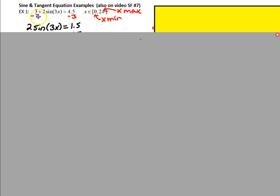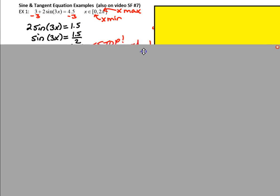The first step is to subtract 3 from both sides of the equation, leaving us with 2 sine of 3x equals 1.5. Then we'll divide both sides by 2. That would just equal 0.75 if you wanted to write it that way or you can leave it as 1.5 over 2.